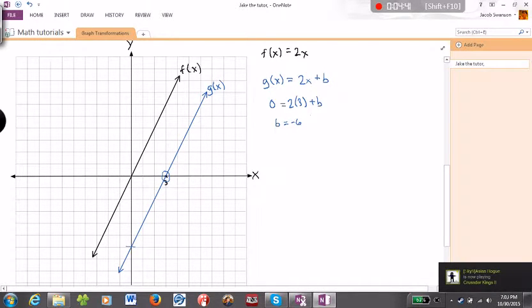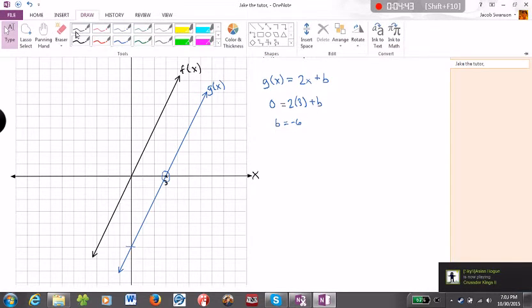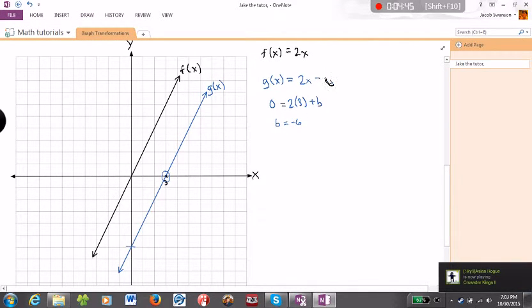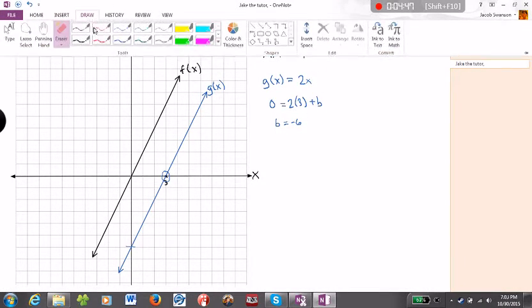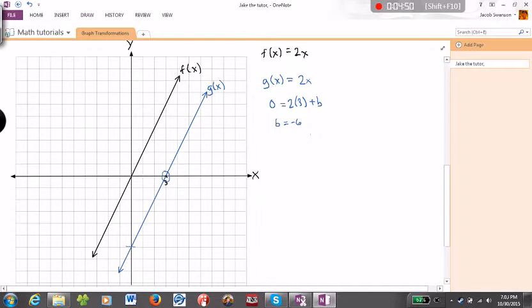So now what I'm going to do is I'm just going to remove this plus b and replace it with what we just solved for. 2x minus six, there we go. So this is our equation for g(x), 2x minus six.